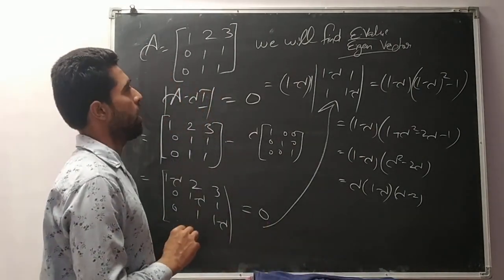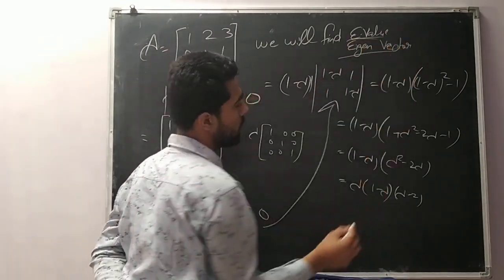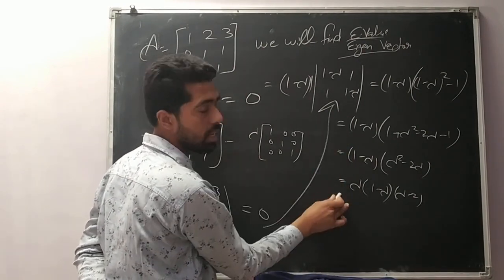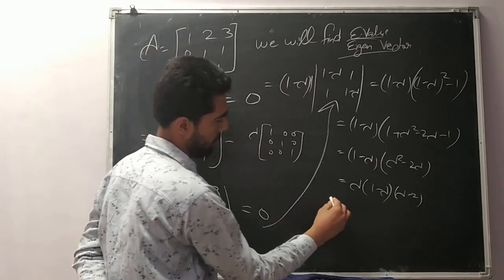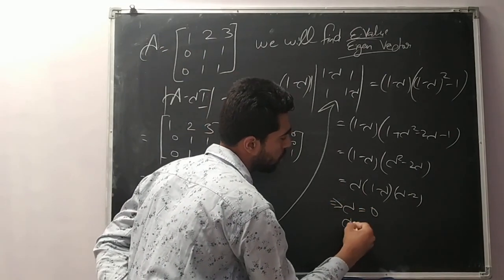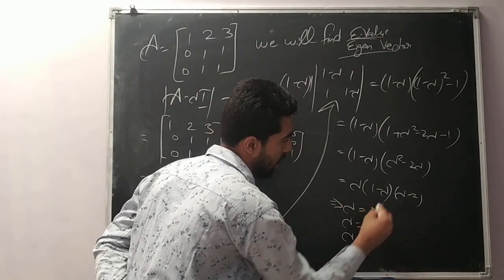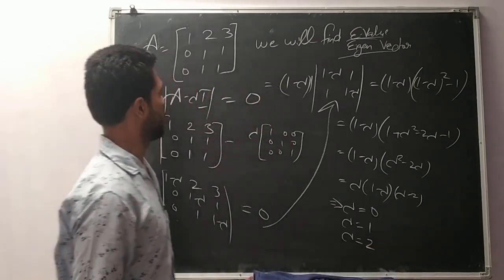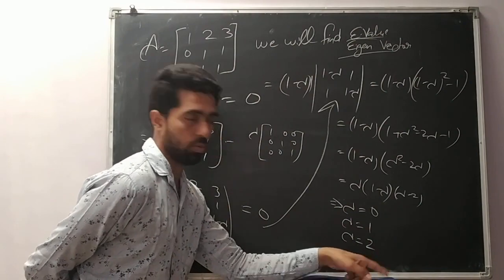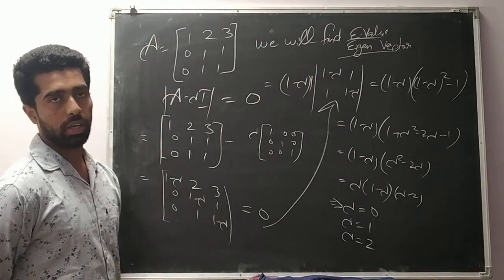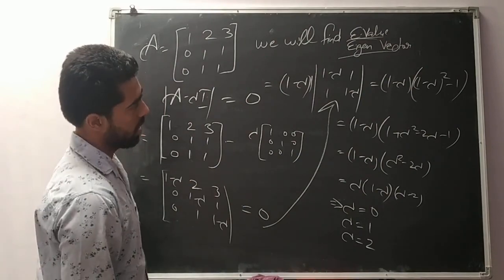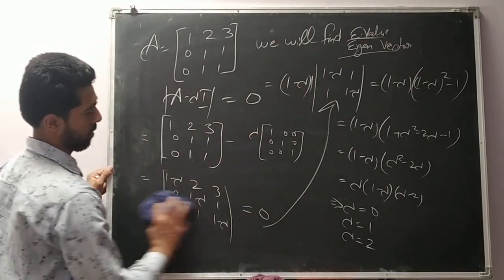When we find eigenvalue, we try to factorize in a linear factorized form. This gives lambda equal to 0, lambda equal to 1, and lambda equal to 2. This matrix has eigenvalues 0, 1, and 2. Now we will find its eigenvectors.